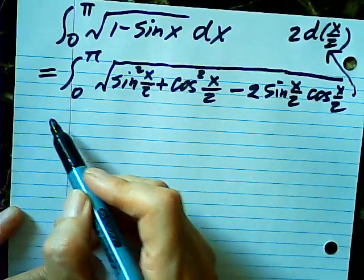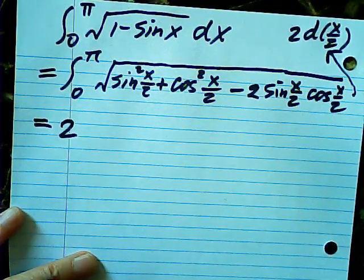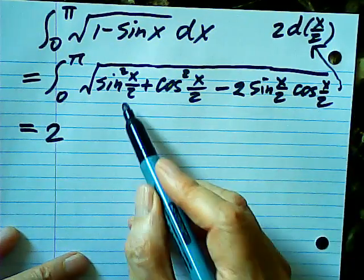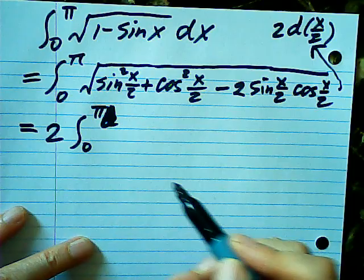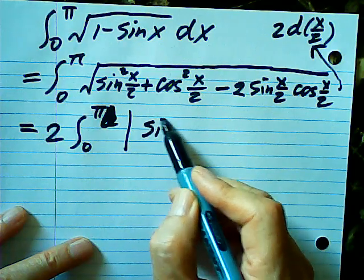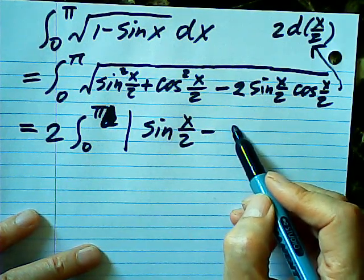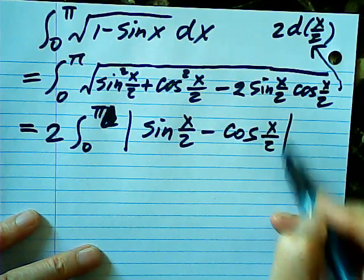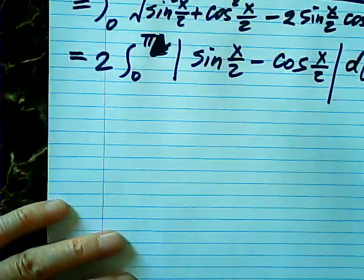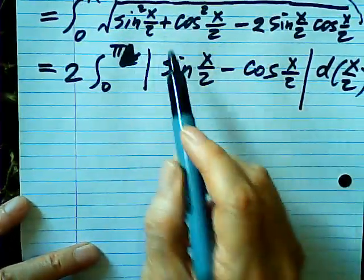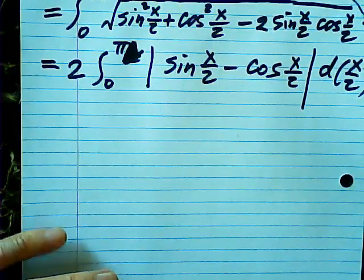So the integral becomes: take 2 out in front, and the inside is the integral from 0 to π of the absolute value of (sin(x/2) minus cos(x/2)) d(x/2). Because (sin(x/2) - cos(x/2))² appears under the square root, after taking the square root we get the absolute value.